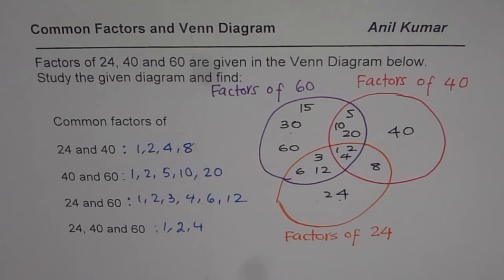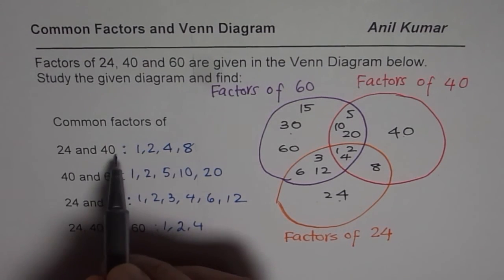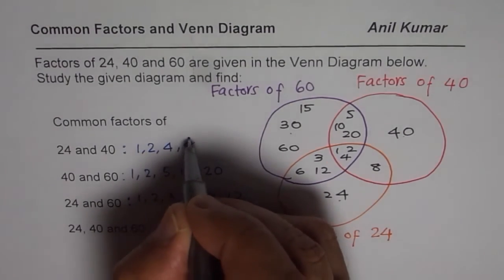That is how you can get common factors from the Venn diagram. Now as an exercise, you can circle the greatest common factor of each group. Here, the greatest common factor is 8.